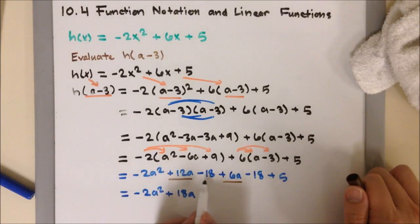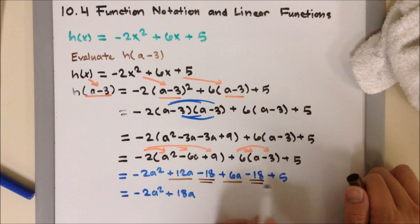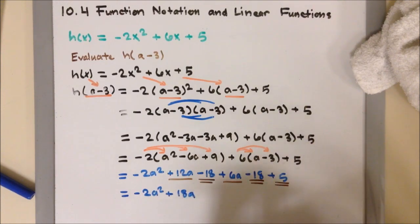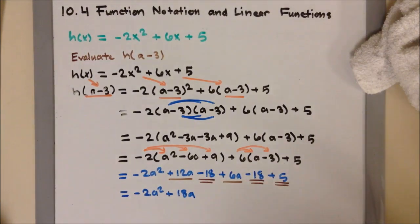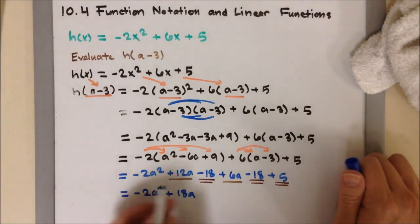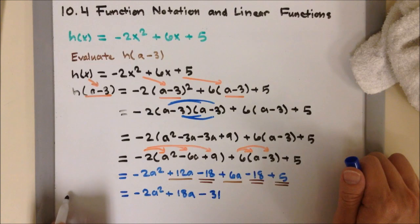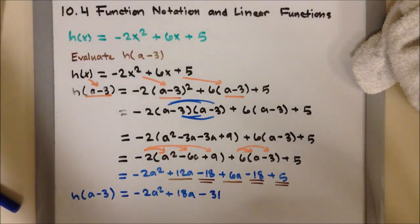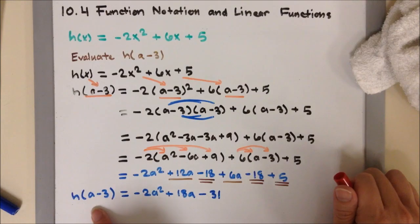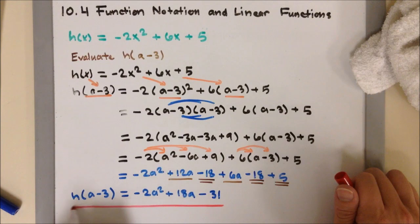Now, my numbers, I have minus 18, another minus 18, and a positive 5. So, minus 18 or negative 18 minus 18, that's negative 36 plus 5 will be negative or minus 31. Then I'm going to bring down my left side, which is H of A minus 3, which we were evaluating or looking for. So, my final answer is H of A minus 3 equals negative 2A square plus 18A minus 31.